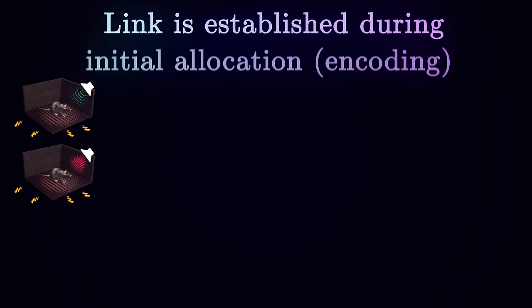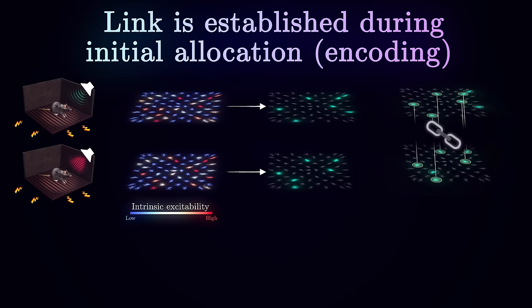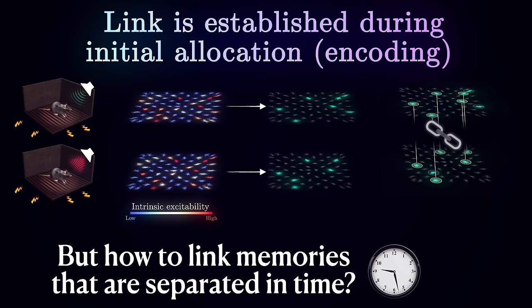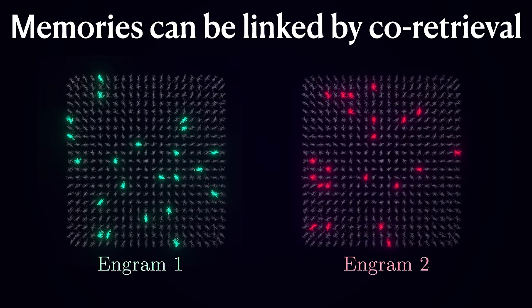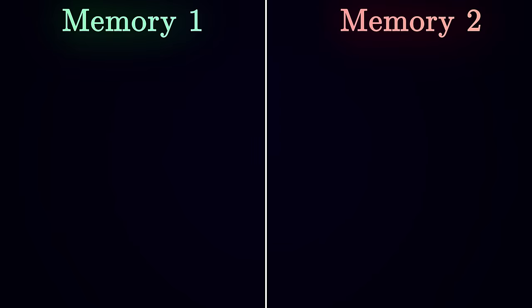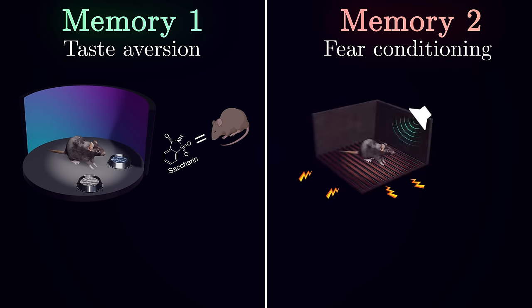Notice that in this example, the link is established only during the initial memory allocation, when the overlapping pool of neurons is recruited. But this offers very limited capabilities because the two events may not seem related at the time of the memory formation and the link may become apparent only later once the dots are connected, so to speak. It turns out that memories can also be linked by co-retrieval when the two engrams that are initially non-overlapping become repeatedly reactivated together. For instance, researchers trained mice on two different tasks, taste aversion where the animals learned to associate saccharine with the feeling of sickness and fear conditioning paradigm pairing sound to the foot shock.